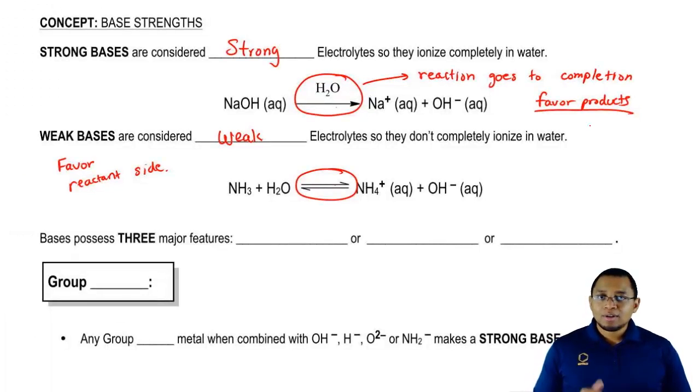So again, remember, weak acids, weak bases, we need to use an ice chart to find pH or POH. We'll talk about those later down the road. It's imperative that you guys remember how to identify things.